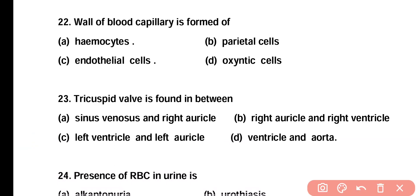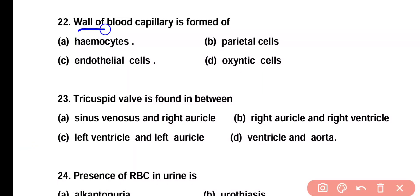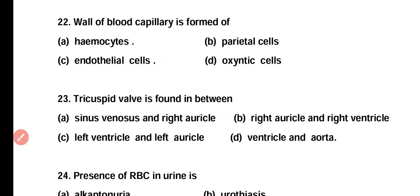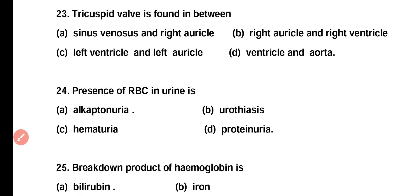Question number 22. The wall of blood capillaries is formed of: hemocytes, parietal cells, endothelial cells, or oxyntic cells? Correct answer is option C. The walls of blood capillaries consist of endothelial cells.